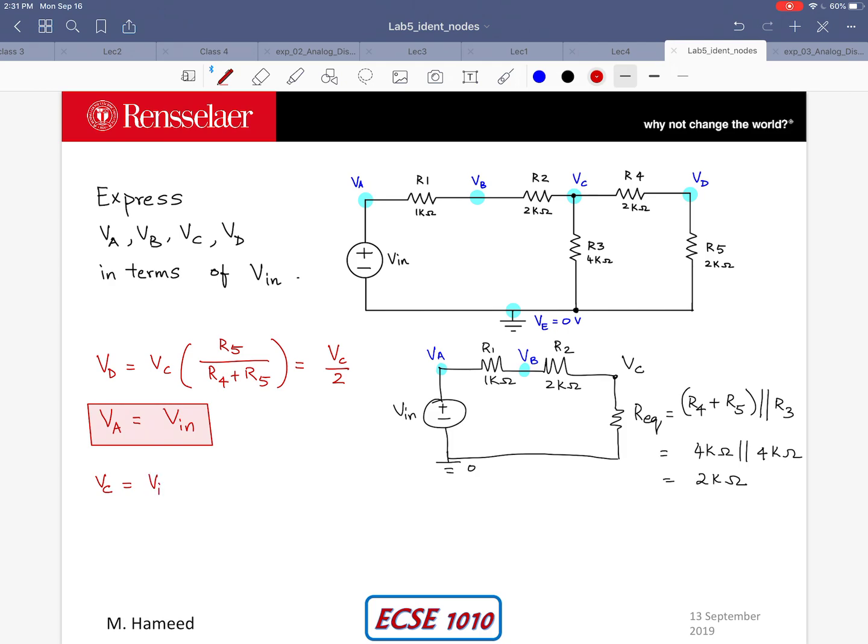So VC is Vin multiplied by R equivalent divided by R1 plus R2 plus R equivalent. Now because I know all these resistors, R equivalent is 2 kilo ohms and I have 1 plus 2 plus 2, 5 kilo ohms as the total of the three resistors. So this simplifies to 2Vin divided by 5 which is for VC. And that's another result that I was interested in finding.